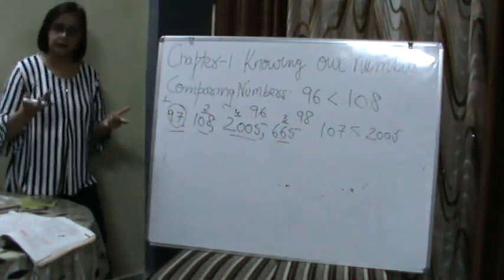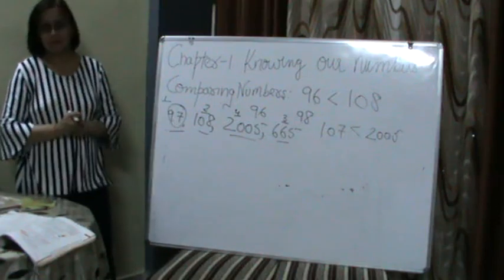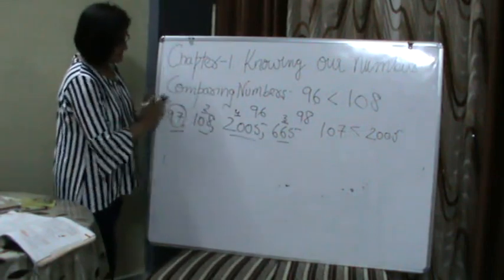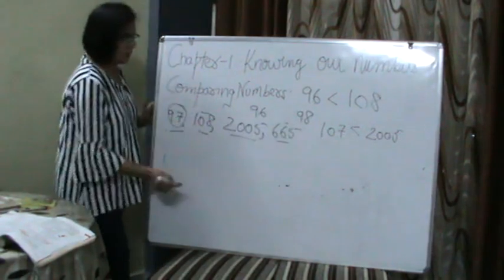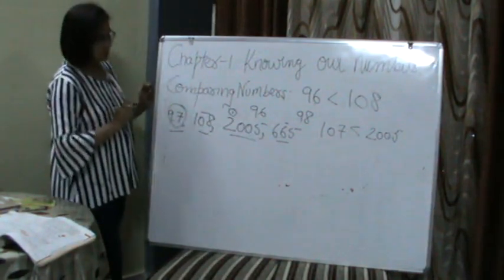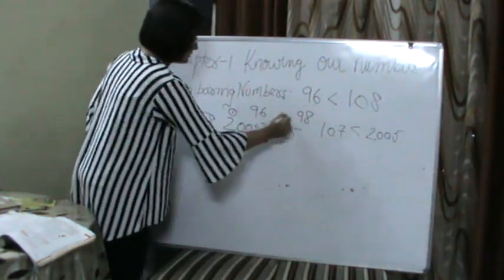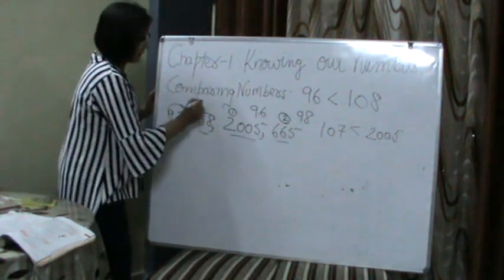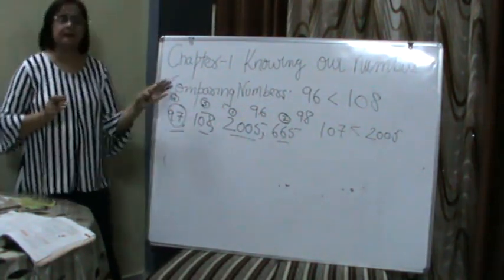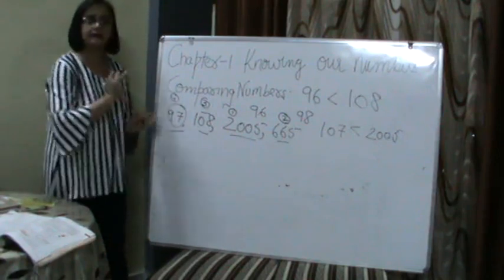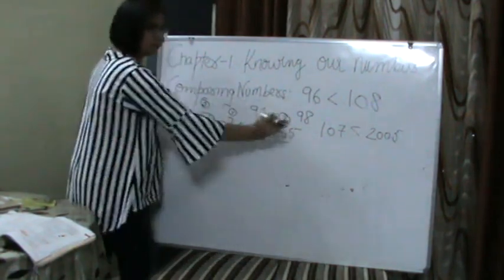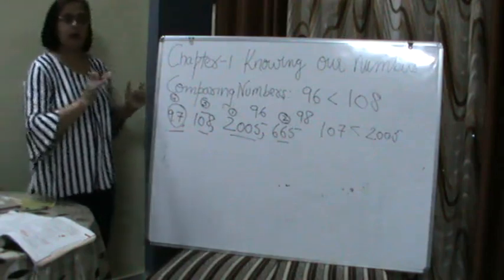The second order is descending order. Descending order means big to small. In big to small, sabse bada number pahle aata hai. Ab is mein se sabse bada number 2005 hai, so 2005 will come first. Uske baad six hundred sixty-five, uske baad 108, aur usse chota 97. That is our descending order. So we have studied comparing numbers in detail — how to compare two numbers, four numbers, and how to arrange in ascending and descending order.